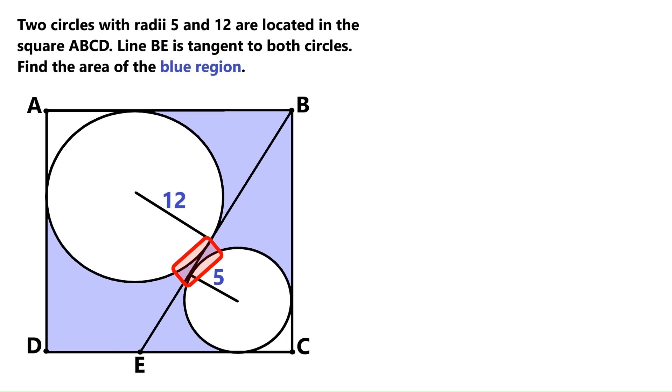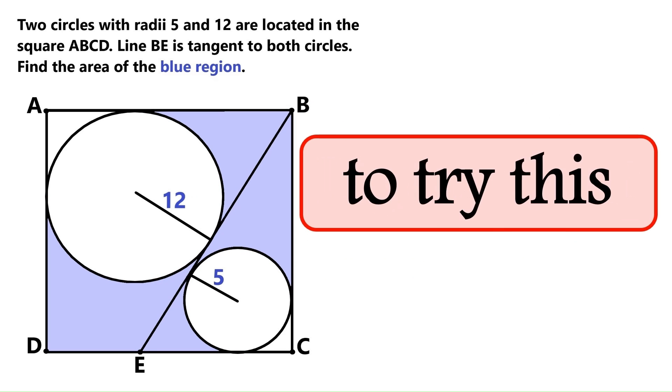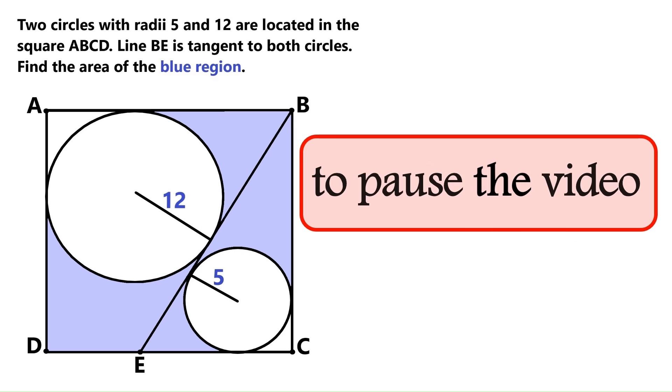The circles don't touch, but we've got this line segment EB that is tangent to both circles, and we need to find the area of this bizarre shaped region. So if you want to try this on your own, now is the time to pause the video, because I'm starting to solve it right now.